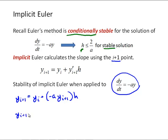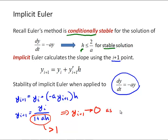Or y i plus 1 equals y i over 1 plus a times h. And a is a positive number, h is a positive number, so this denominator is always going to be greater than 1, which means that y i plus 1 is always going to go to 0 as we move forward in time or as i goes to infinity. And the bottom line here is that implicit Euler is always stable for this differential equation. And that conclusion is generally true that implicit methods are generally going to be more stable.